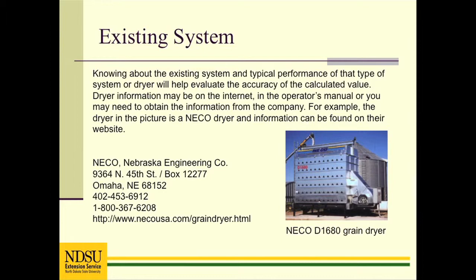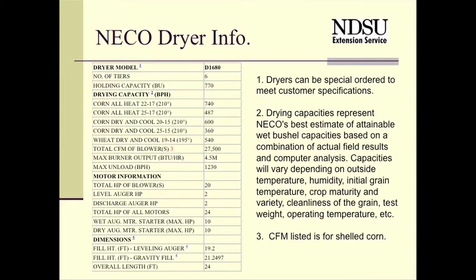For example, the dryer in the picture is a NECO dryer and information can be found on their website. This shows the type of information normally included in the company brochure for the dryer, listing the expected drying capacity and physical characteristics. For example, the maximum burner output is listed as 4.5 million BTUs per hour. Typically, the operating heat requirement will be much less than the burner capacity. It also lists the total airflow for the blowers or fans.